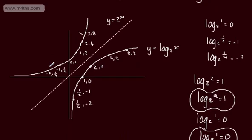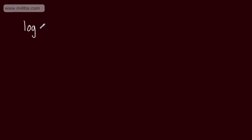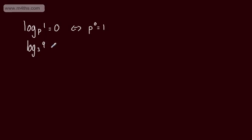Let's work through a few more examples. Log to the base p of 1 equals 0, so the exponential equivalent is p to the power of 0 equals 1. For log to the base 3 of 9, that equals 2, so the exponential statement is 3 to the power of 2 equals 9.